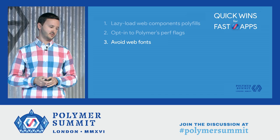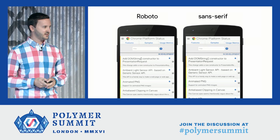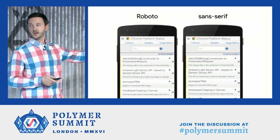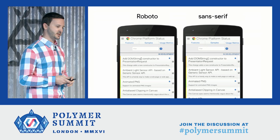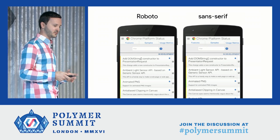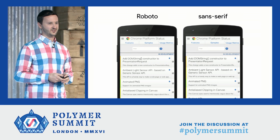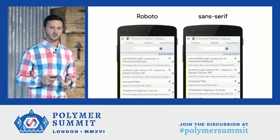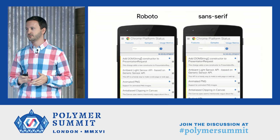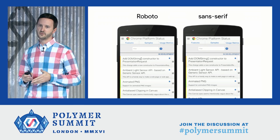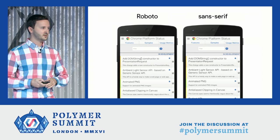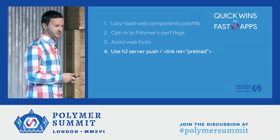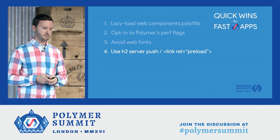Number three: avoid web fonts. I did a side-by-side comparison for Chrome Status — we were using Roboto — and compared it with just the native installed font on the system. You really can't tell the difference. So I removed Roboto altogether. There's no point making requests for Roboto, wasting bandwidth, and dealing with flash of unstyled content. Might as well just show the user the native stuff. It got a lot faster just because of that.